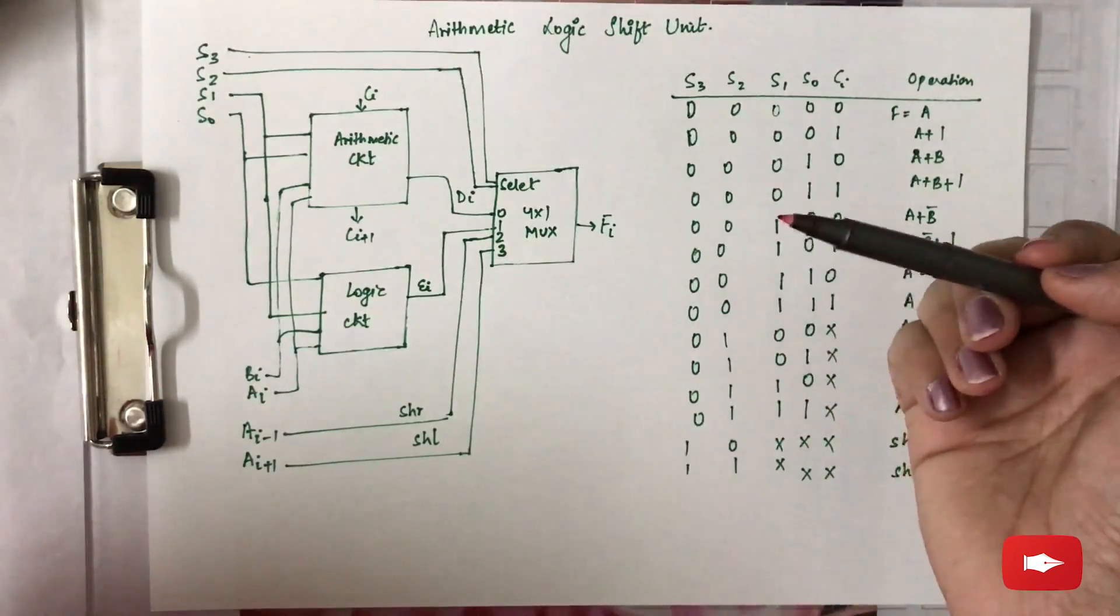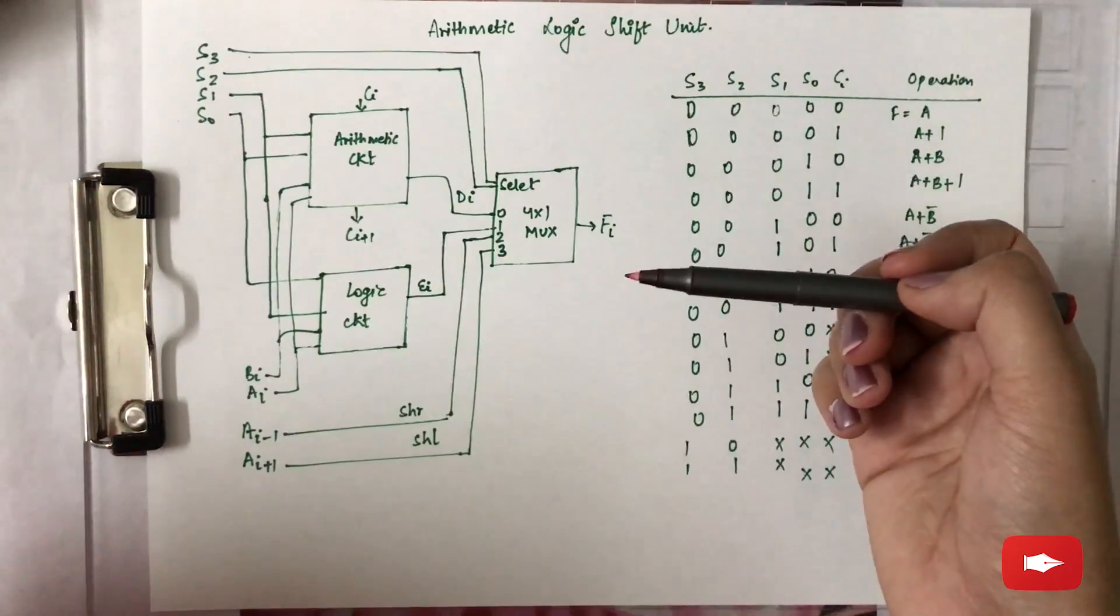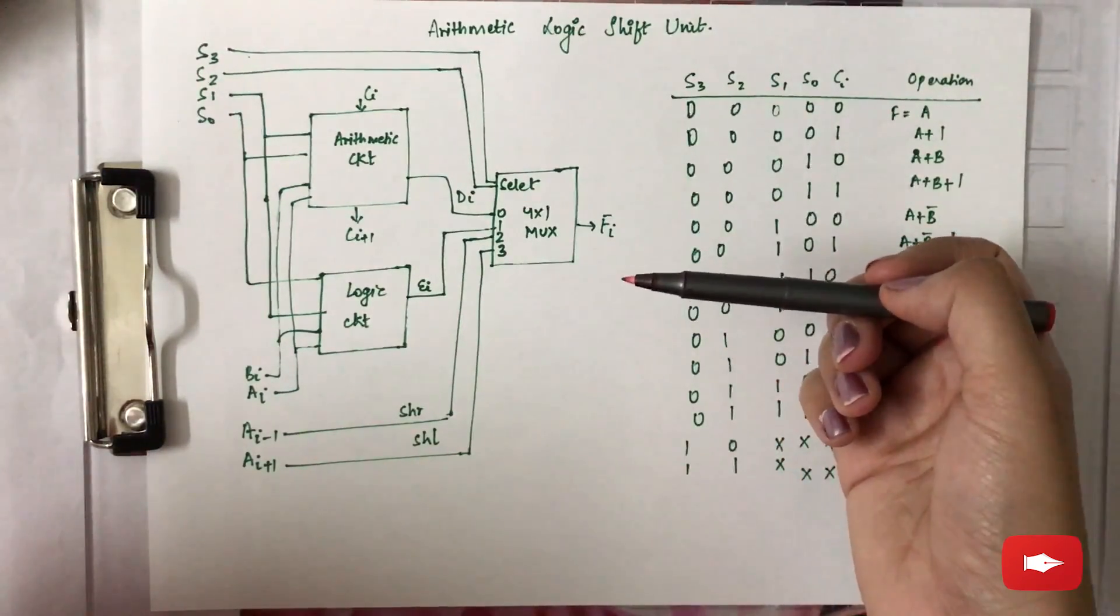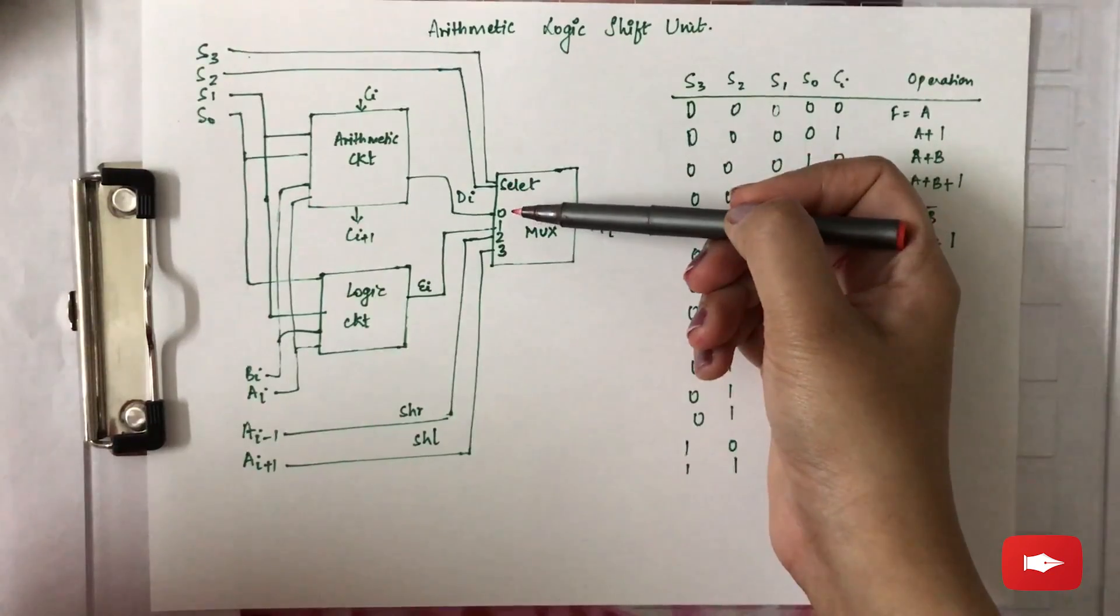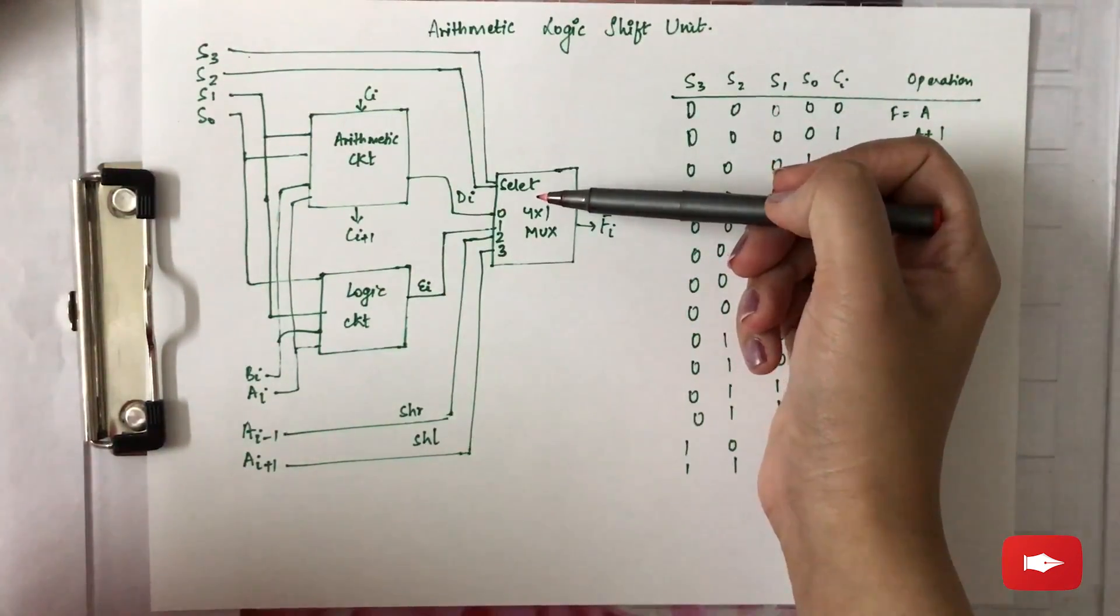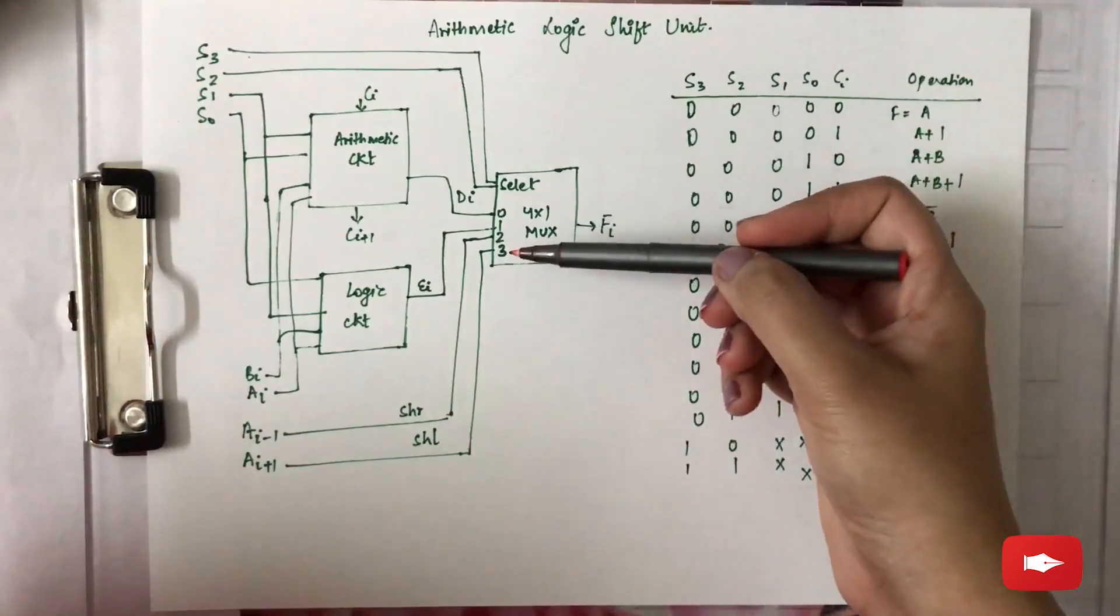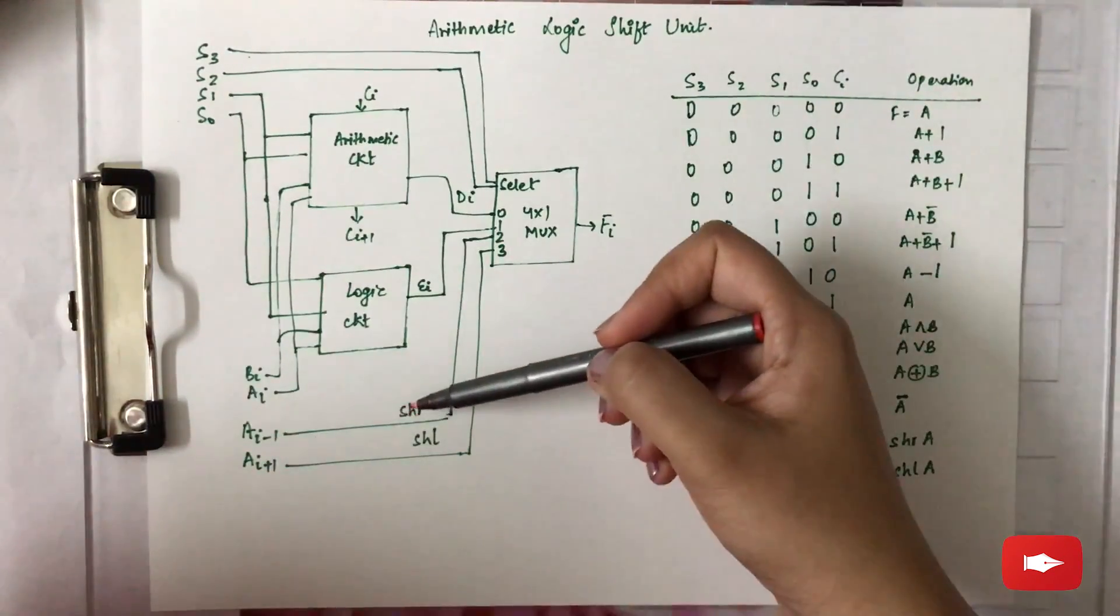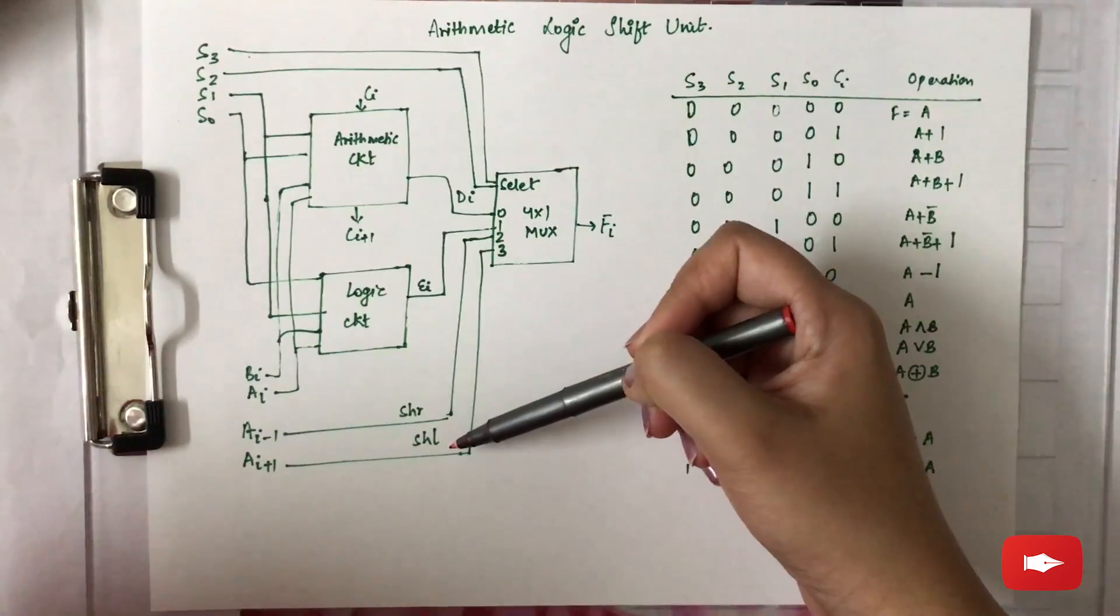Then we have a four by one multiplexer at the output end which uses the output between an arithmetic output and the logic output, which is done with the help of two select lines s3 and s2. There are two more inputs to the multiplexer: ai minus 1 and ai plus 1 to perform shift right and shift left micro-operations respectively.